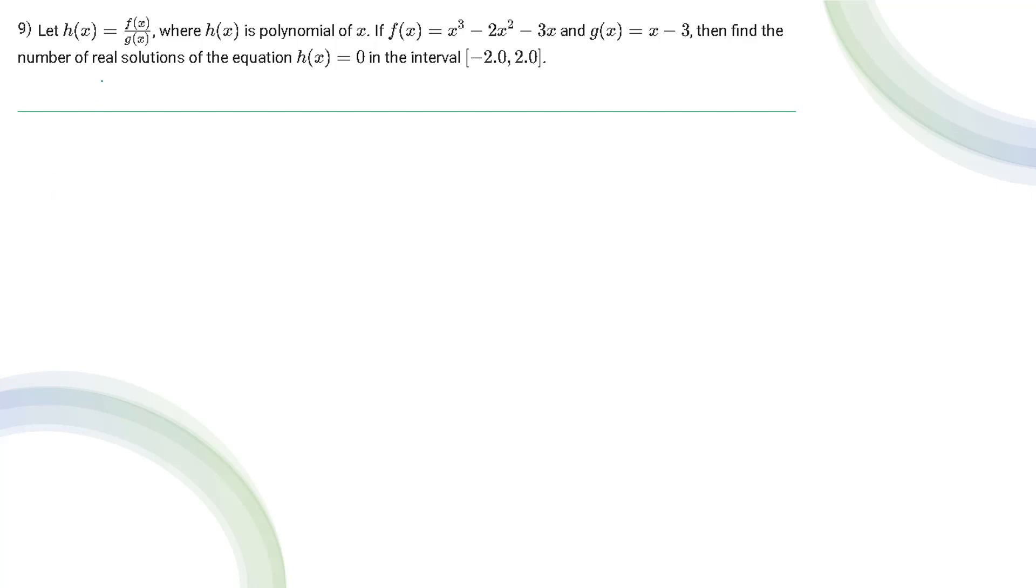Question number 9 says let h(x) equals f(x) upon g(x) where h(x) is a polynomial of x. We have been given the equation of f(x) and g(x) and then find the number of real solutions. We have to find the number of real solutions for which h(x) equals 0 in the interval minus 2 to 2.